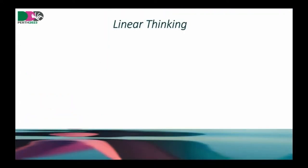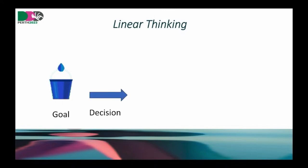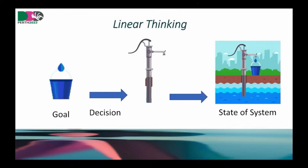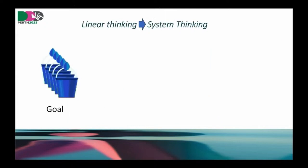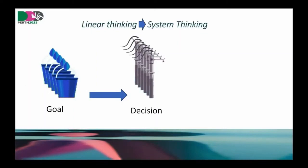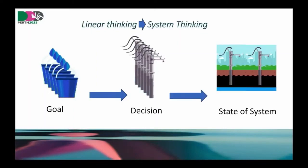Coming back to us as developers — and I'm also pointing to myself — we have a tendency toward linear thinking. What I mean is: I have a goal, I want to drink water, I want a bucket of water especially with this weather. So I make a decision, I buy a water pump — genius, I've got water. And the good thing is everybody else thinks that's brilliant. Everybody else wants water. And everybody makes the same decision. And suddenly I no longer have water, because everybody else is doing it too.